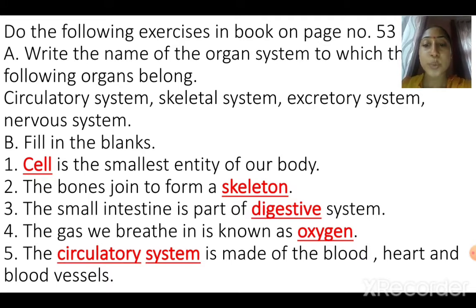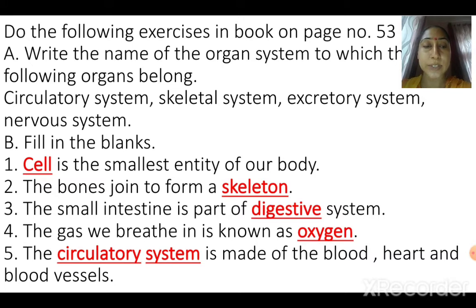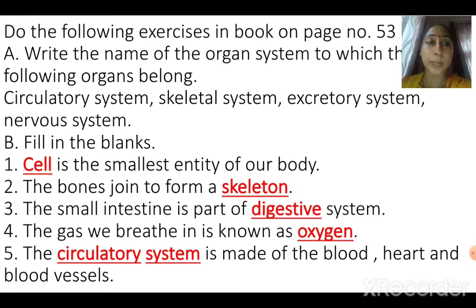Fourth one: the gas we breathe in is known as — which gas do we breathe in? Oxygen. We breathe in oxygen. Fifth one: the blank is made of blood, heart, and blood vessels. The circulatory system consists of blood, heart, and blood vessels. The heart pumps the blood, and the blood is carried by the blood vessels to all the body parts.